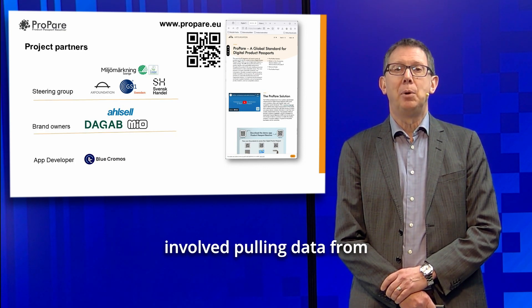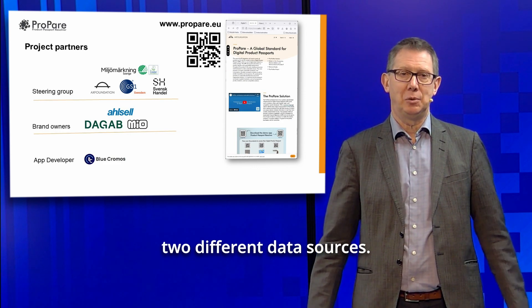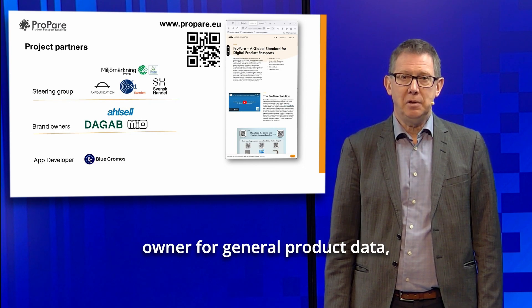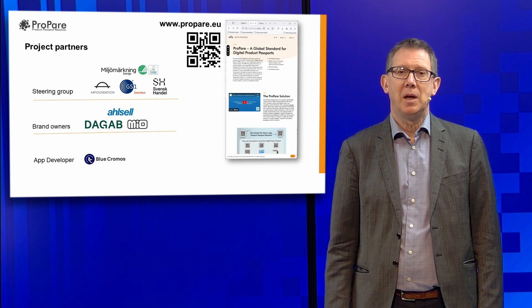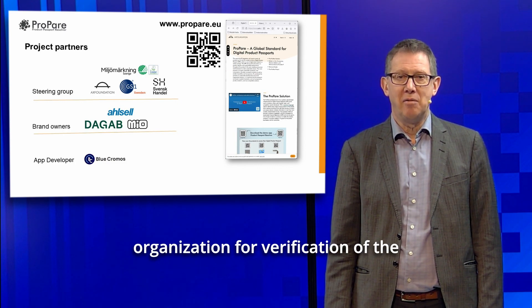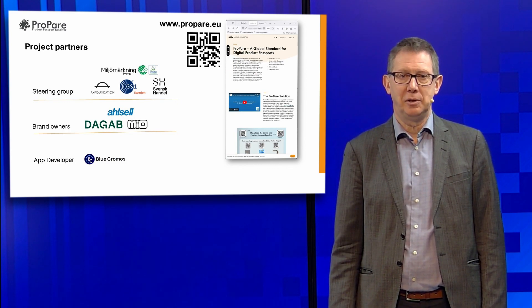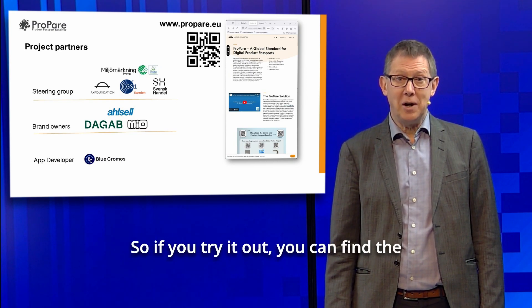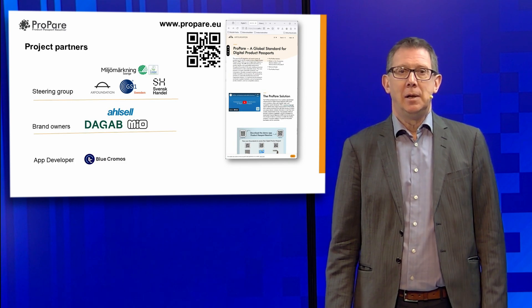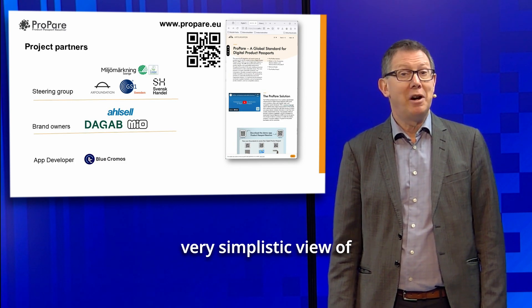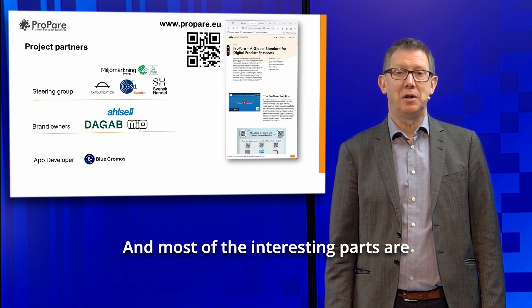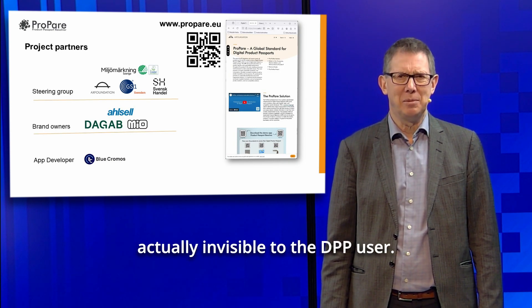For each of the products, the project involved pulling data from two different data sources: first from the brand owner for general product data, and also from the ecolabel organization for verification of the product certification status. You can find the information on the website, where the prototype offers a very simplistic view of what the DPP could look like. Most of the interesting parts are actually invisible to the DPP user.